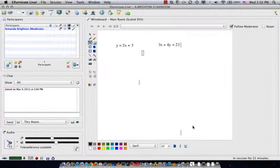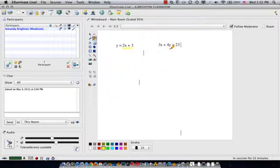We are going to solve a system of linear equations by substitution. Because we know that y is the same thing as 2x plus 3, we're just going to take this 2x plus 3 and substitute it in our second equation, right here, for y.